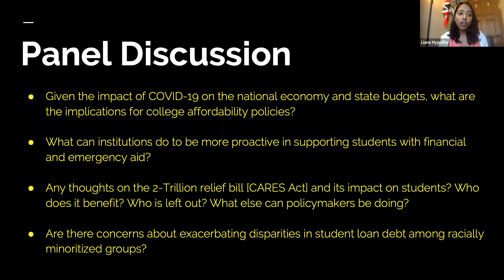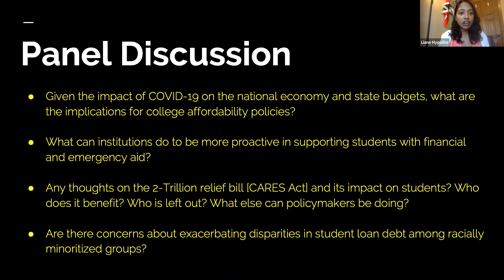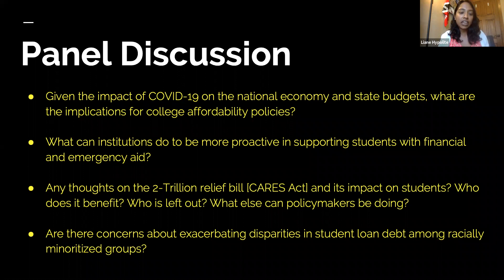Universities need to have really clear communication with young people right now about what is happening. Social media has been used to generate excitement about being admitted or coming in the fall, but it needs to actually be about information sharing as well — letting students know what deadlines are coming up, and if there's any flexibility. I really encourage universities to the extent they can to be flexible with deadlines, especially for racially minoritized students, low-income students, and first-generation college students. Students and their support teams on the high school side should have a plan and a backup plan, given that there are so many things in flux.